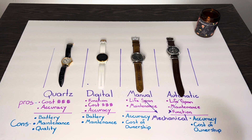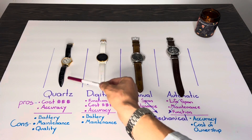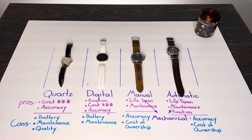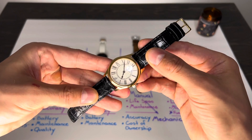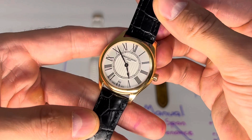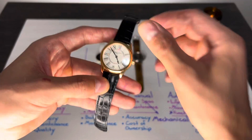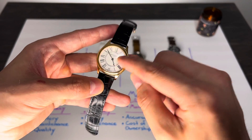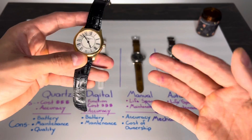Let's start with a watch that the majority of you probably own or have owned — your mass-produced typical quartz watch. This particular watch belongs to my wife; it's a Frédérique Constant I got for her anniversary. It's an honestly stunning watch she wears every day, but I've noticed this quartz watch is missing a seconds hand.